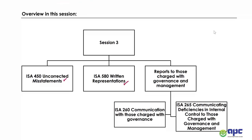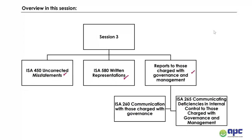We also get management to sign off on certain issues — for example, confirming that the financial statements as a whole are true and fair, and that there are no other frauds and errors. This is called written representations per ISA 580. We also need to report to those charged with governance, including communication regarding deficiencies in internal controls. After all these steps, we can issue our audit report and give the audit opinion.